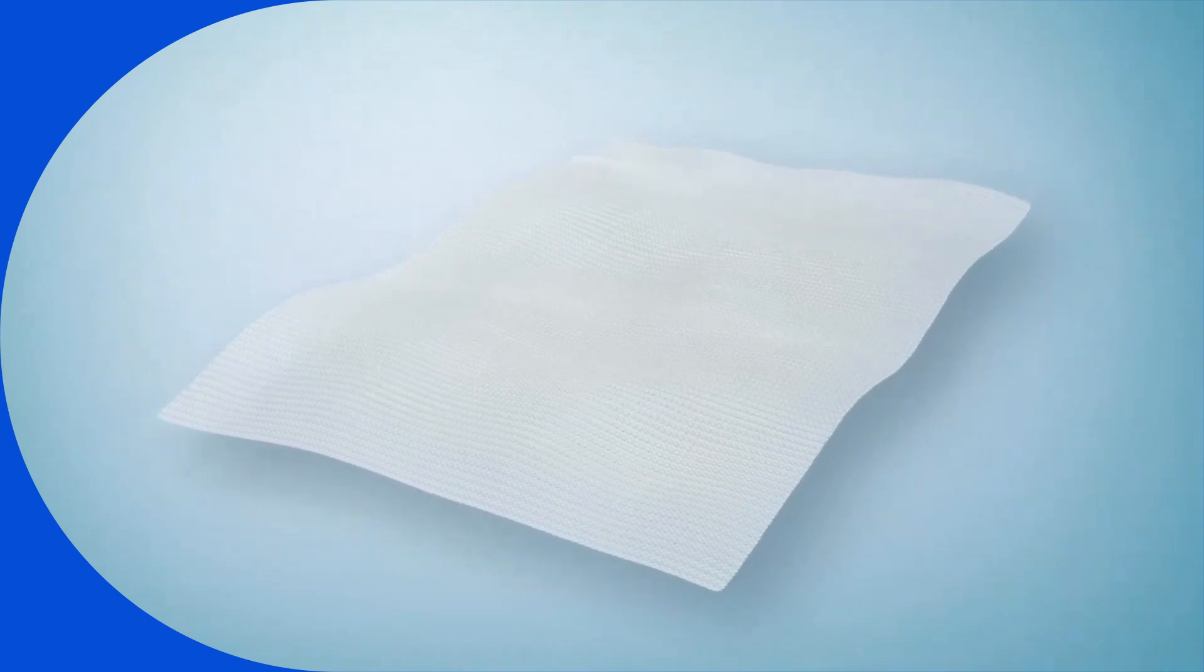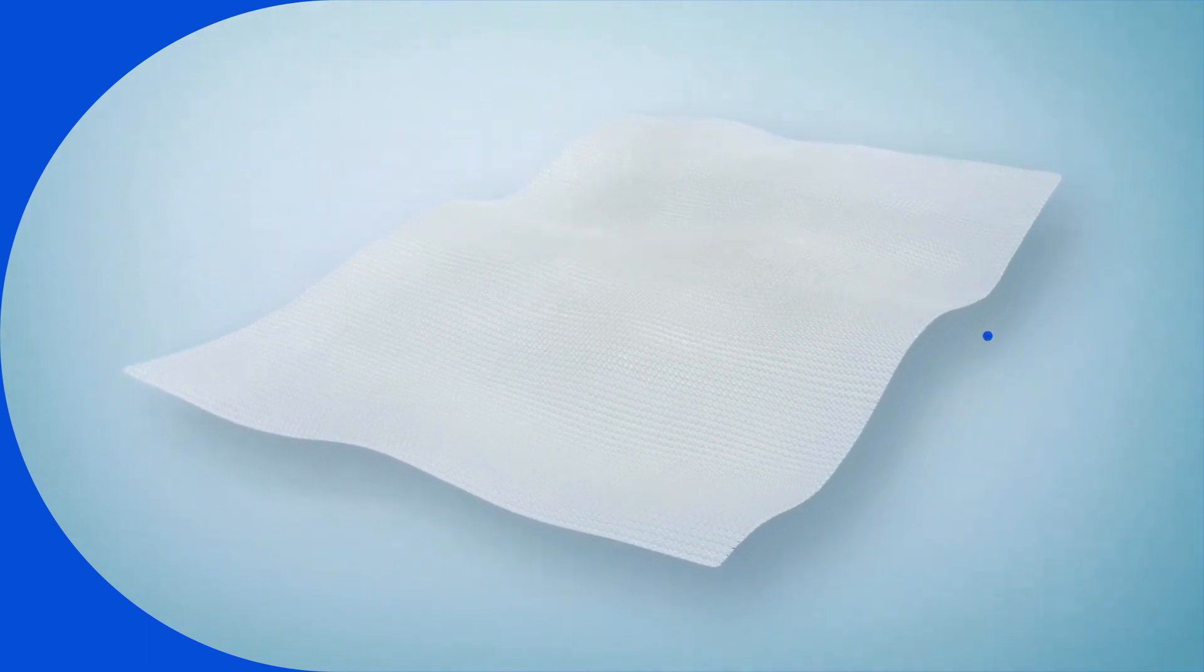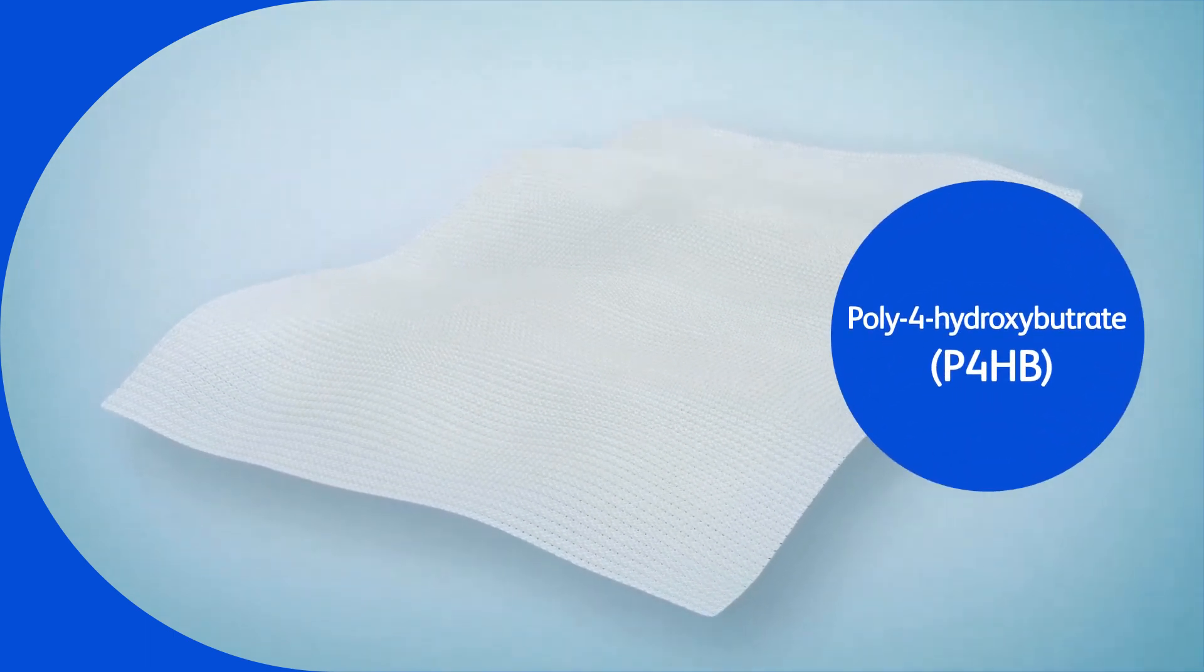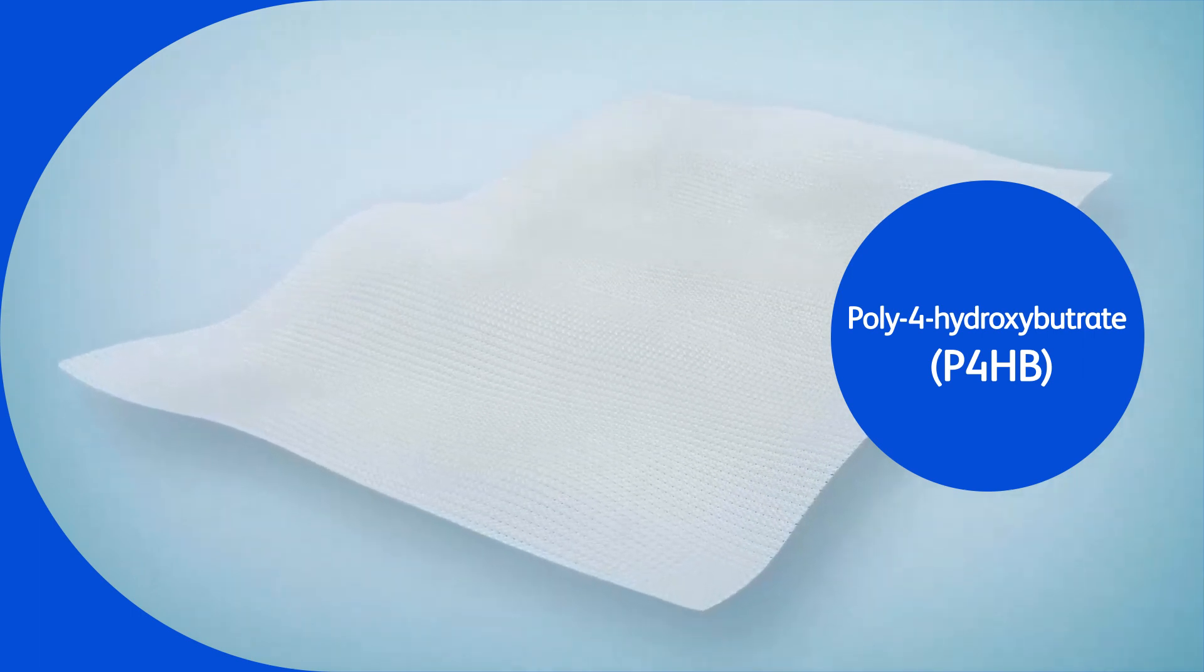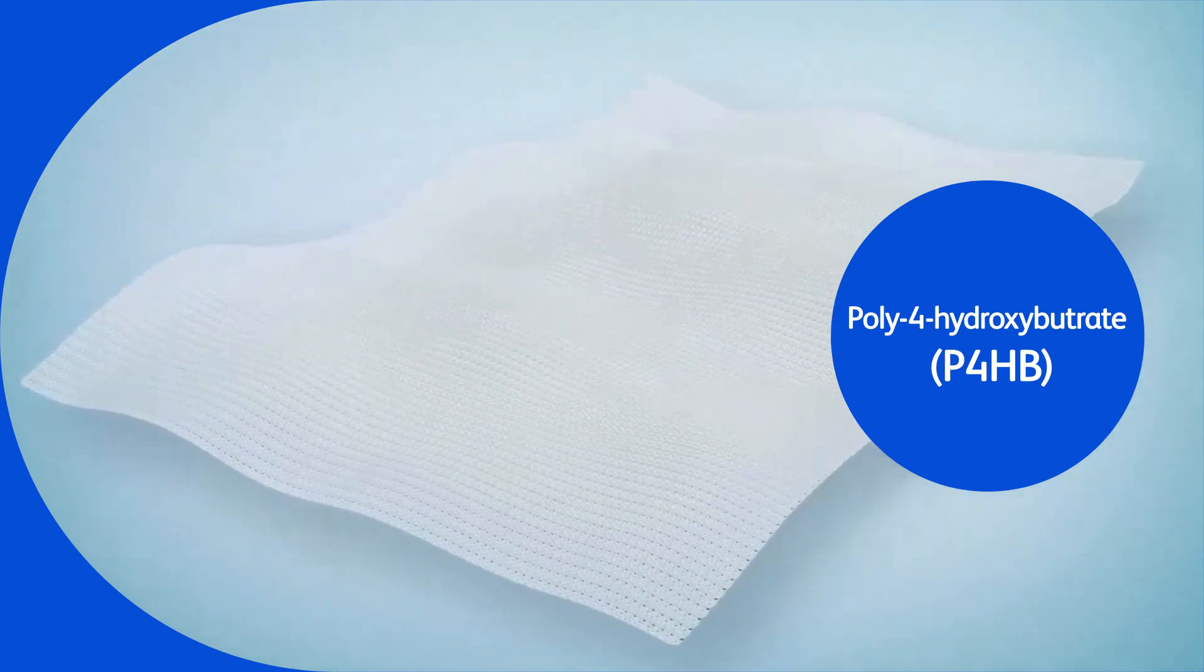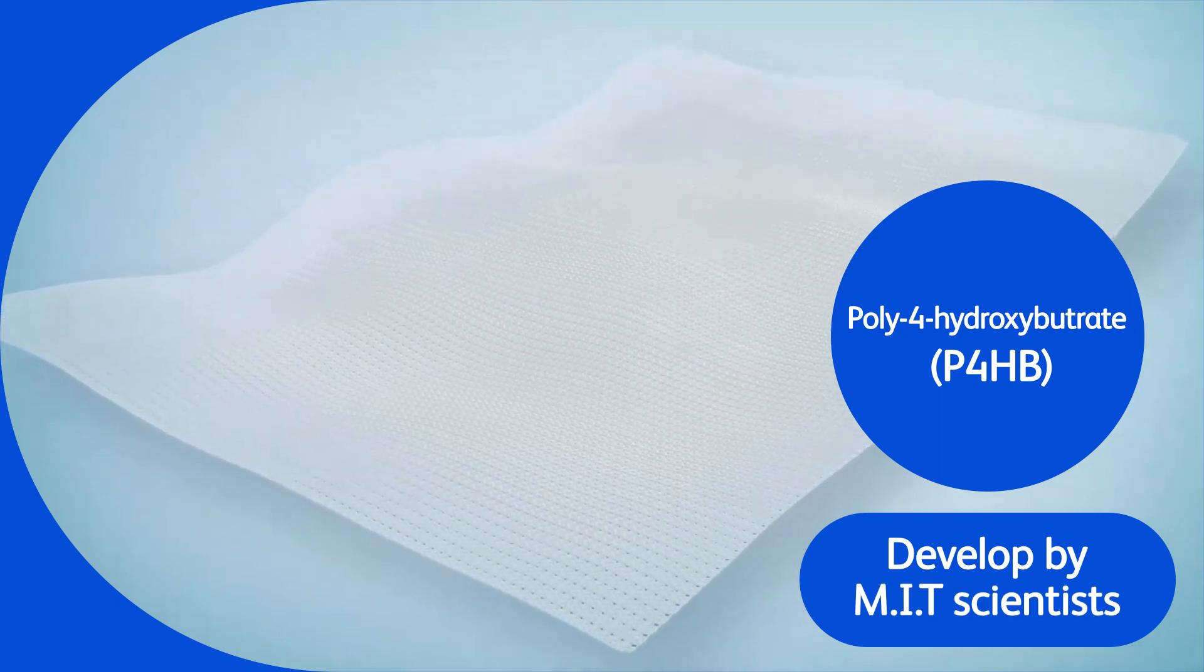Phasix is a fully resorbable monofilament scaffold constructed of poly-4-hydroxybutyrate, P4HB, an advanced biologically produced polymer that was developed by MIT scientists.